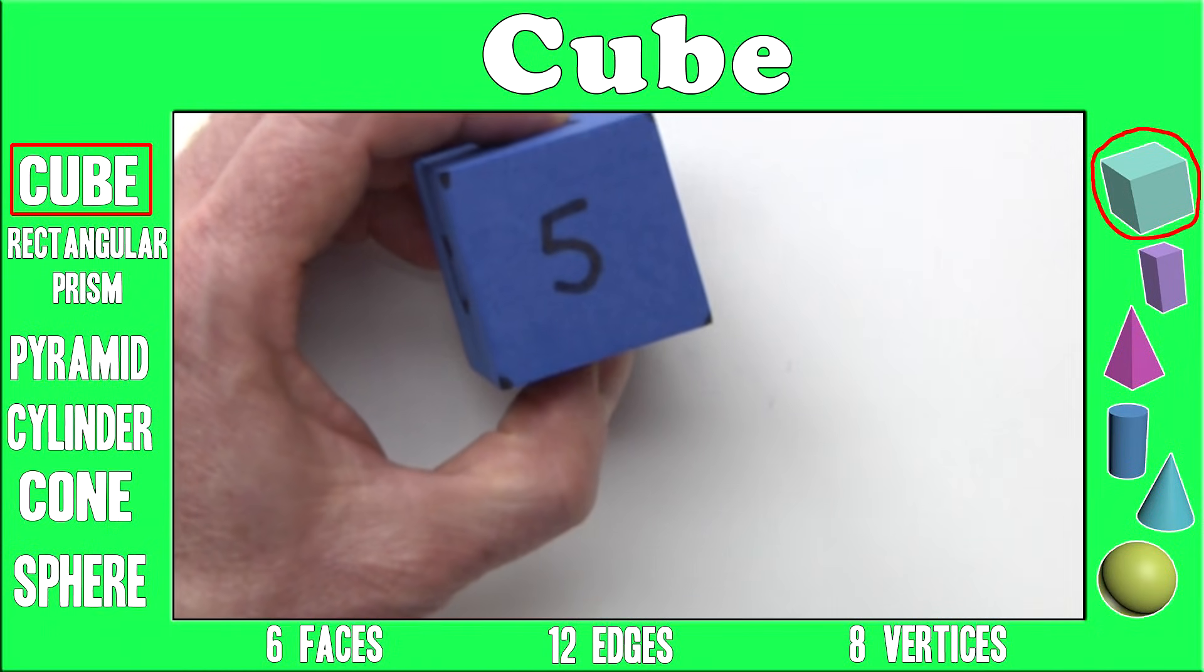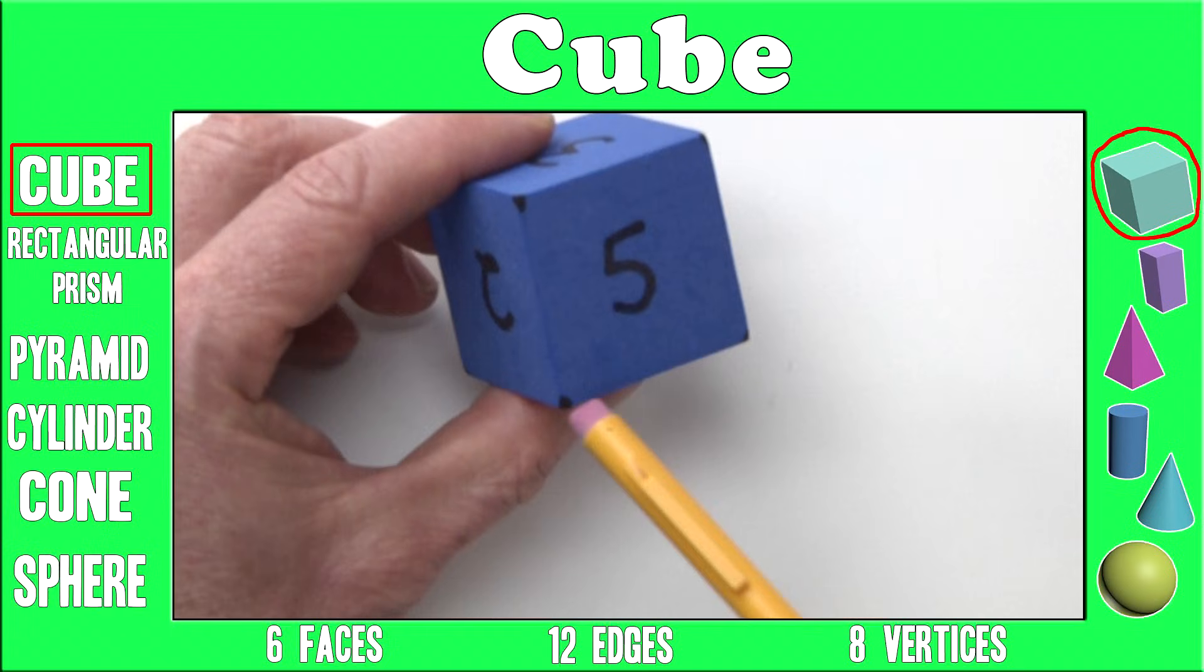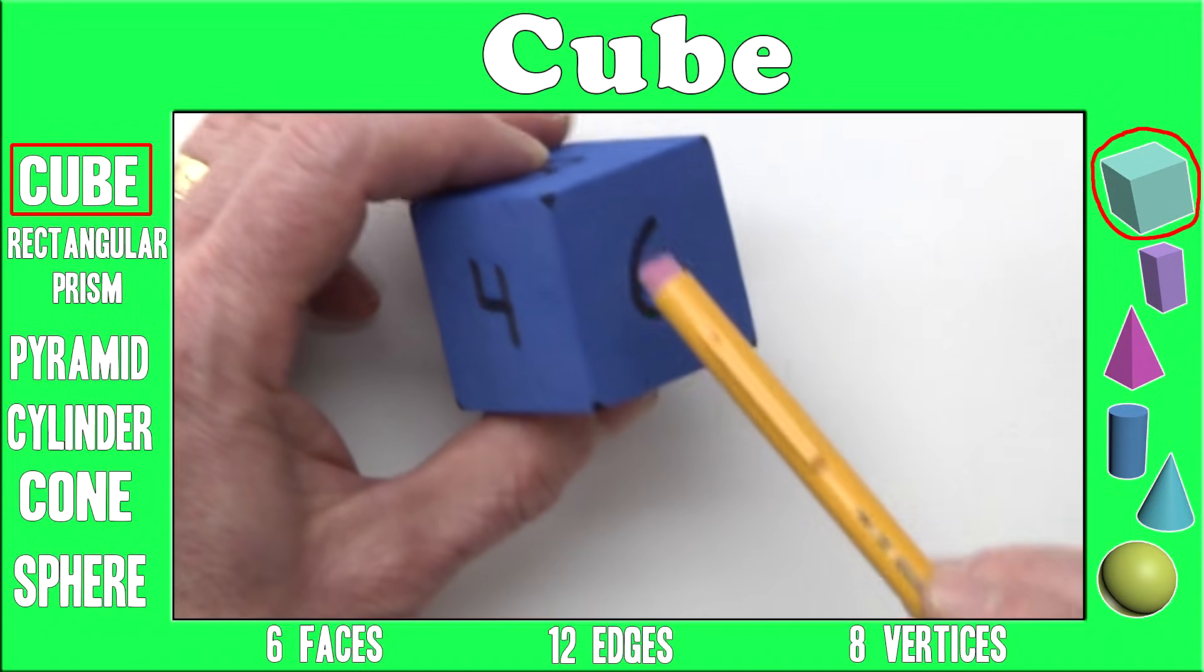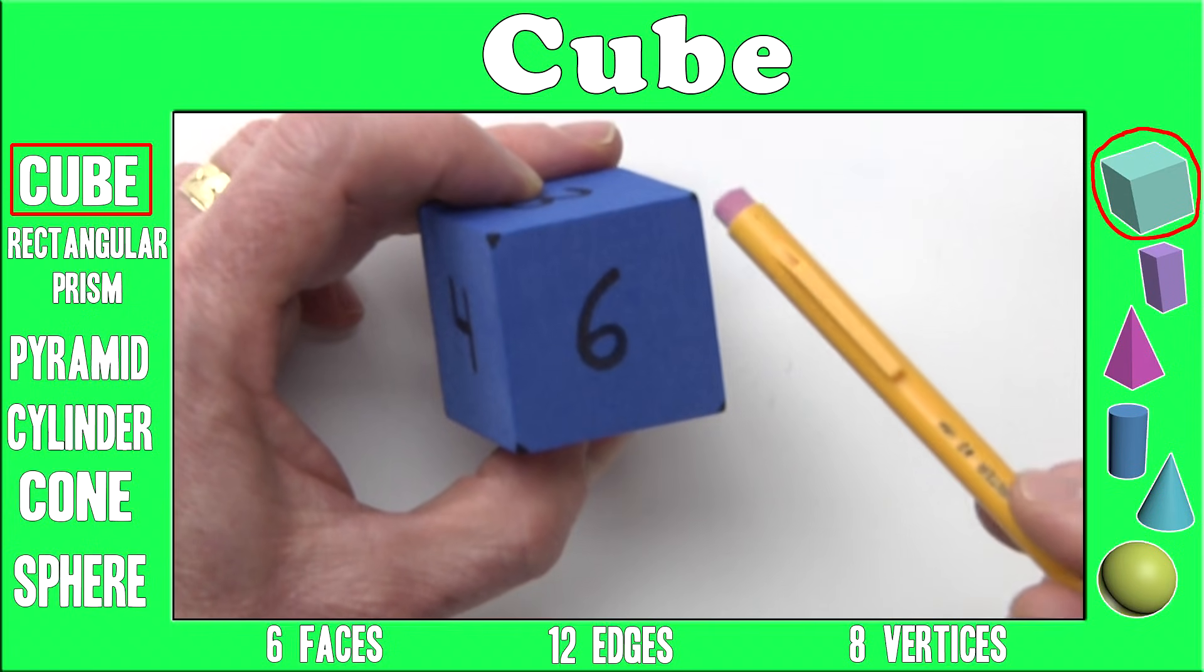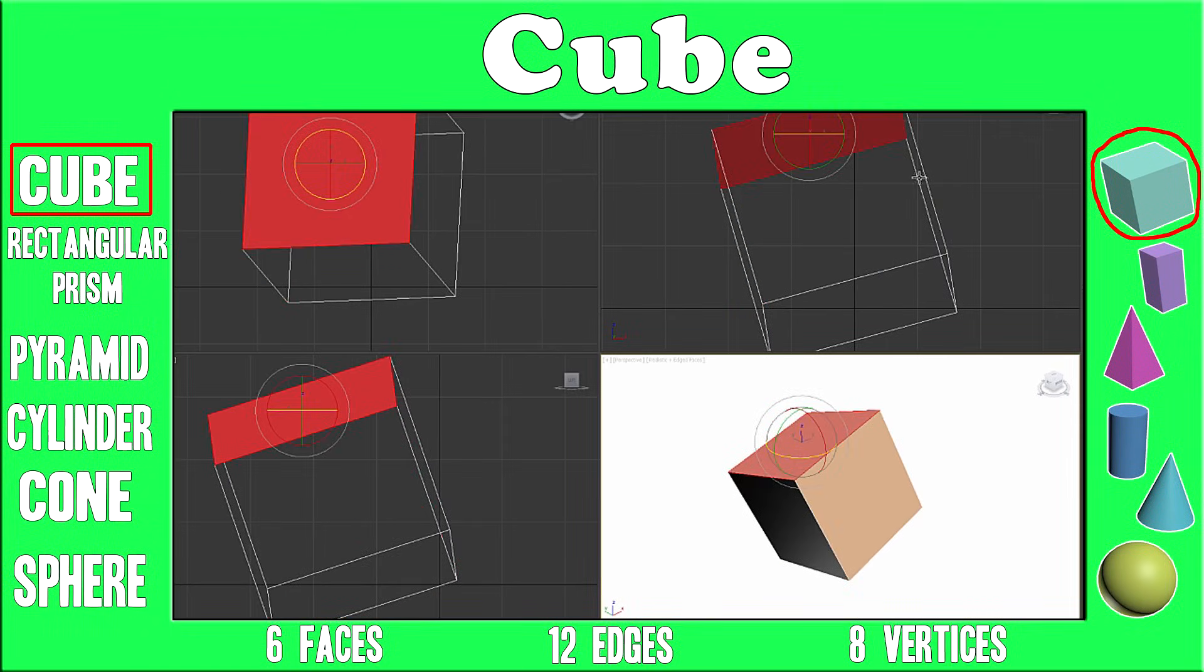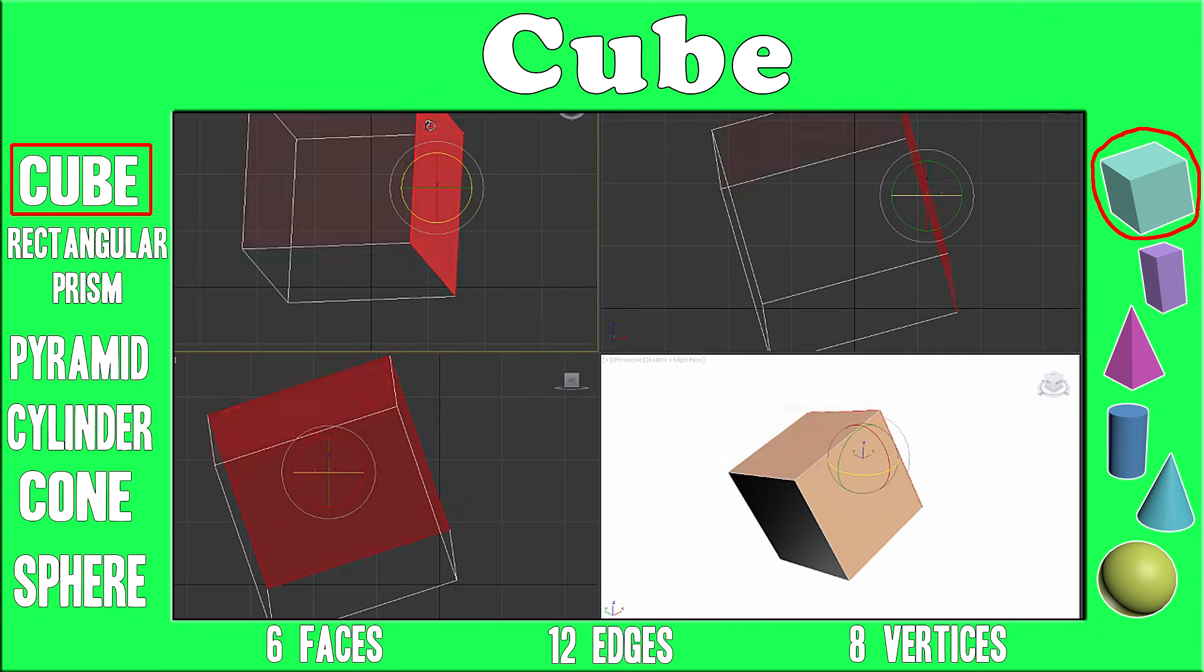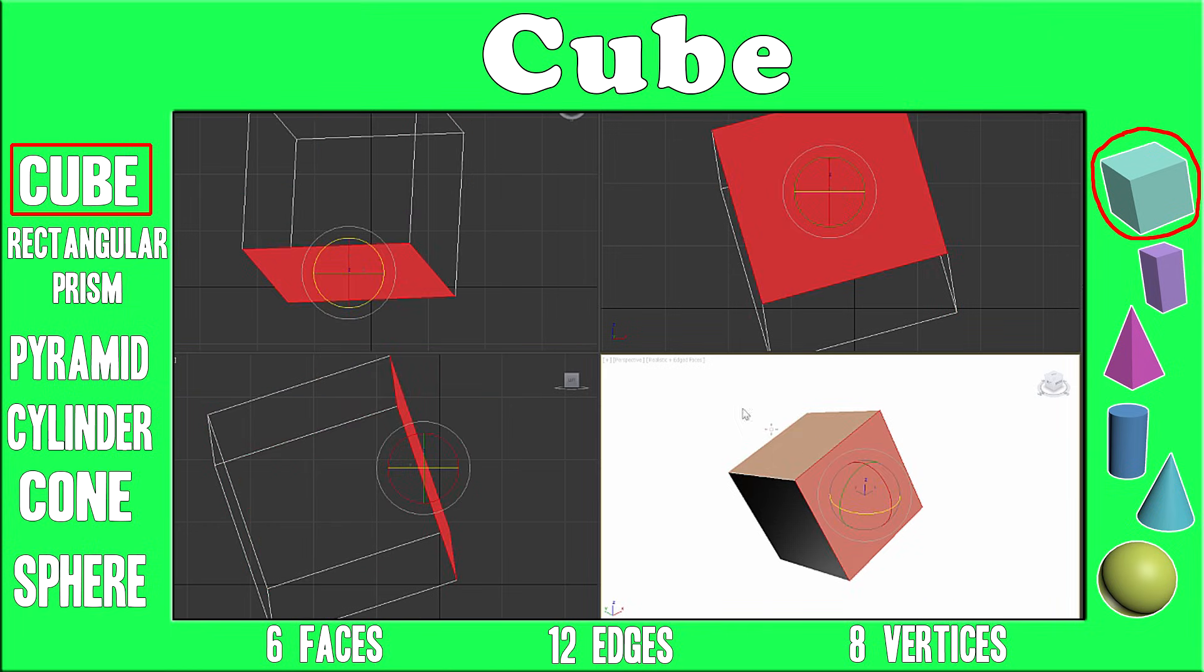A cube has eight vertices. One, two, three, four, five, six, seven, eight. Using our 3D program we can see that the cube is equal length on all sides, and you can see the edges more clearly.